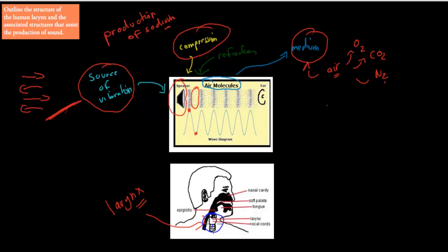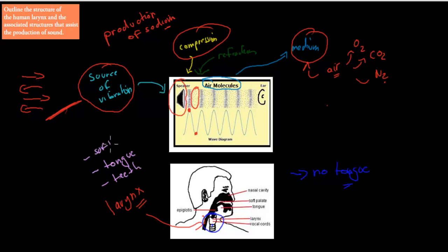But we don't just need only the larynx. If we only needed the larynx to produce sound, then not using my tongue would still mean the same kind of sound. This is how I sound like when I'm using my tongue, and this is how I sound like if I do not use my tongue. So the larynx, whilst important as the first thing that produces sound, there are other structures such as the tongue, the teeth, and the soft and hard palate — all of these are also important for sound production and are found in the oral cavity.